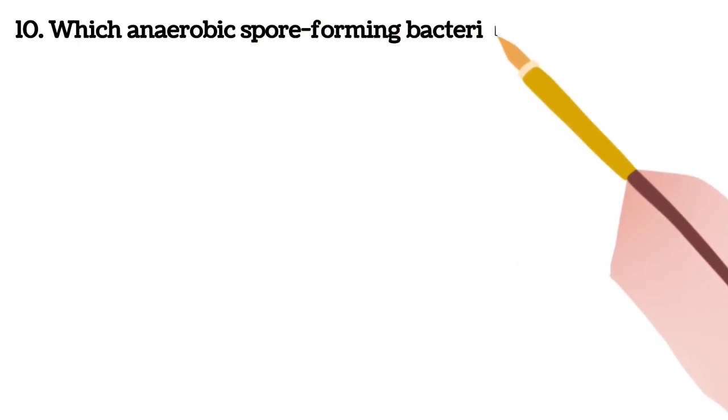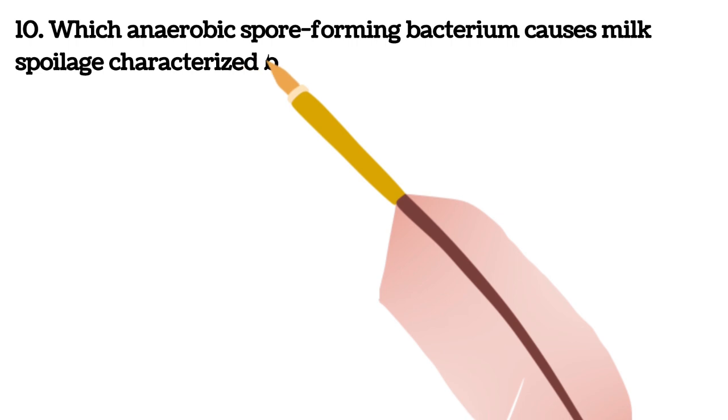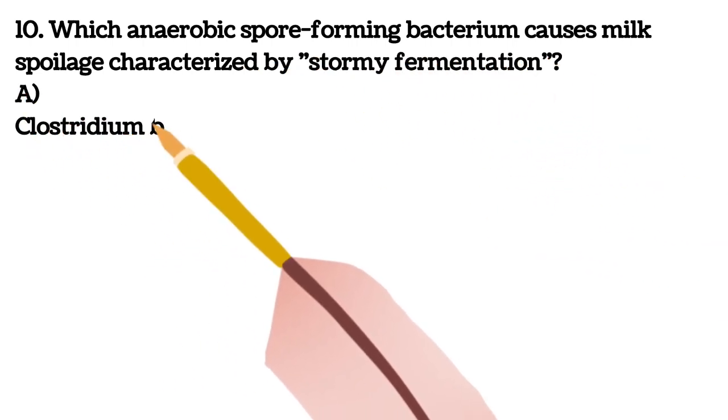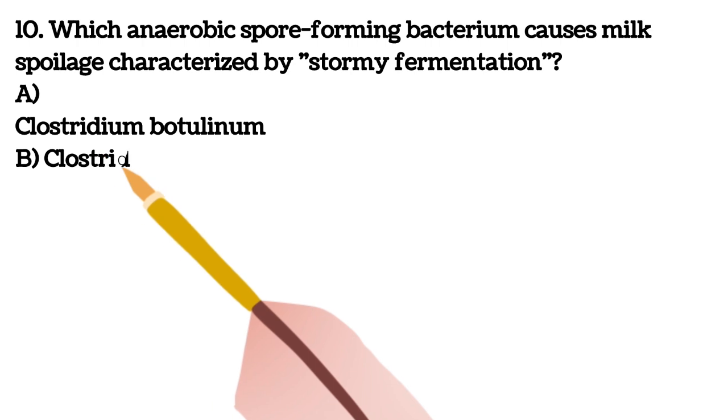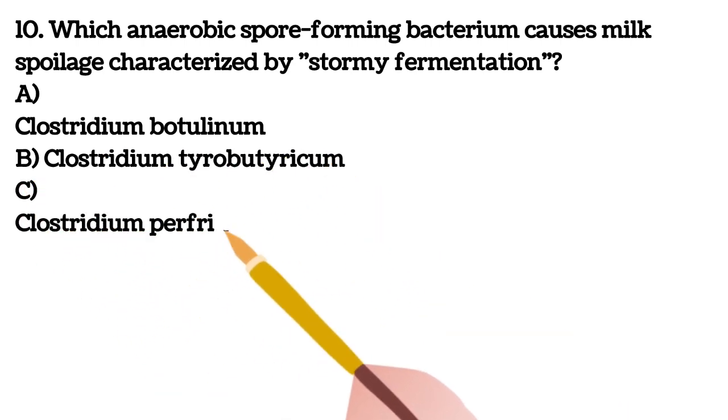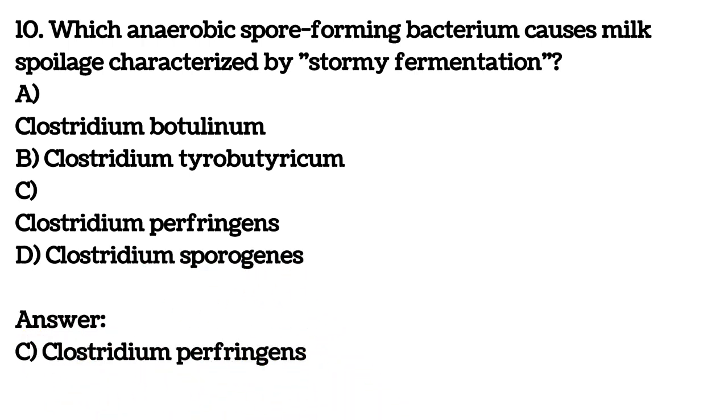Tenth question. Which anaerobic spore forming bacterium causes milk spoilage characterized by stormy fermentation? A. Clostridium botulinum B. Clostridium tyrobutyricum C. Clostridium perfringens D. Clostridium sporogenes. Here answer is C, Clostridium perfringens.